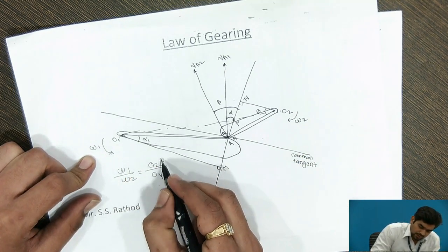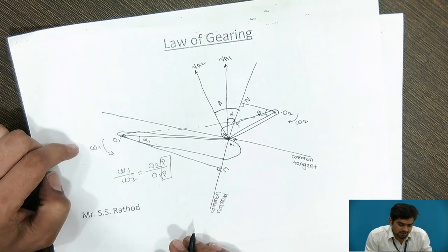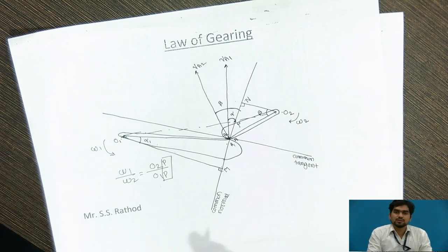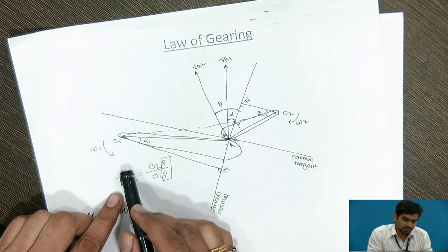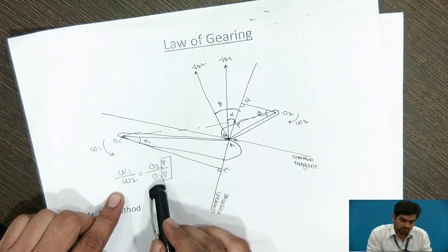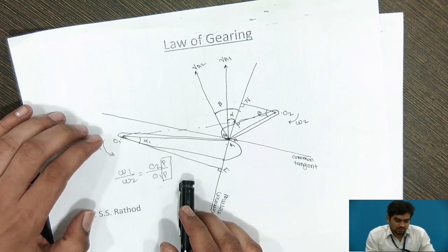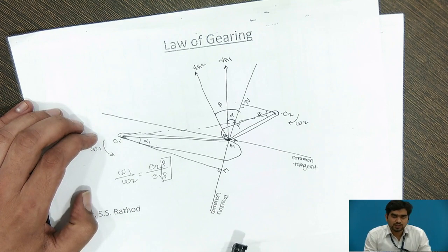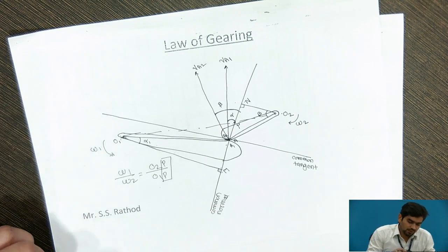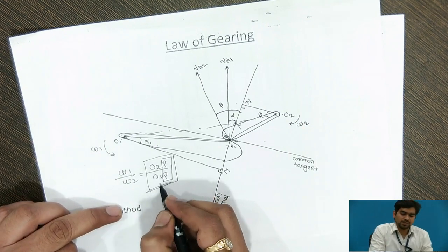Therefore, the pitch point P must be a fixed point if the Law of Gearing is to be satisfied. By this equation, omega1 by omega2 equals O2P by O1P, the point P must be fixed. If you want to verify the Law of Gearing, the ratio of angular velocities between the two gears must remain constant, and accordingly we must design the distance ratio O2P by O1P.